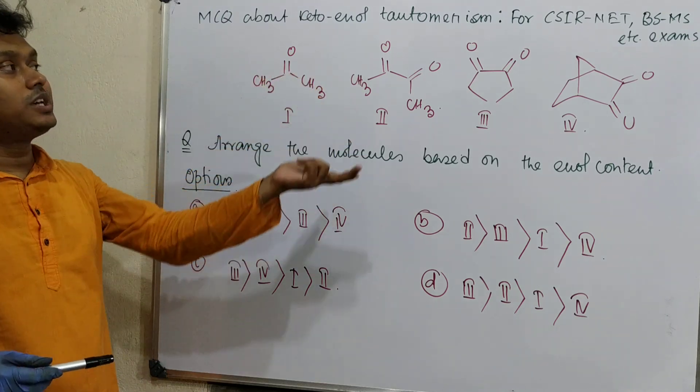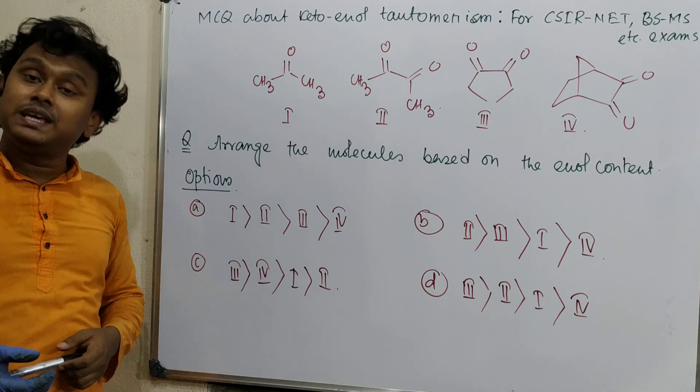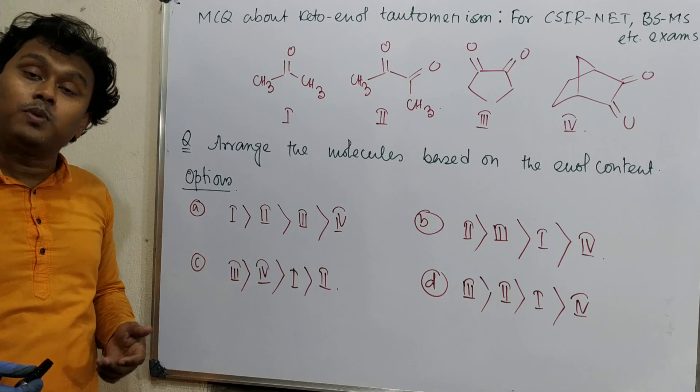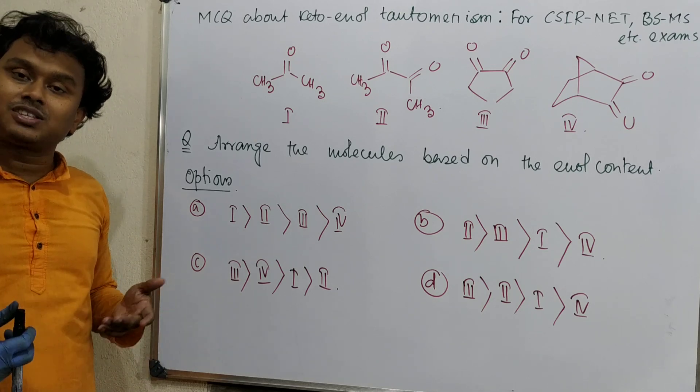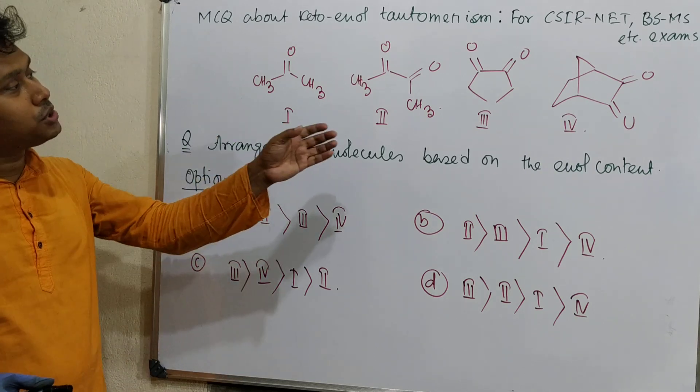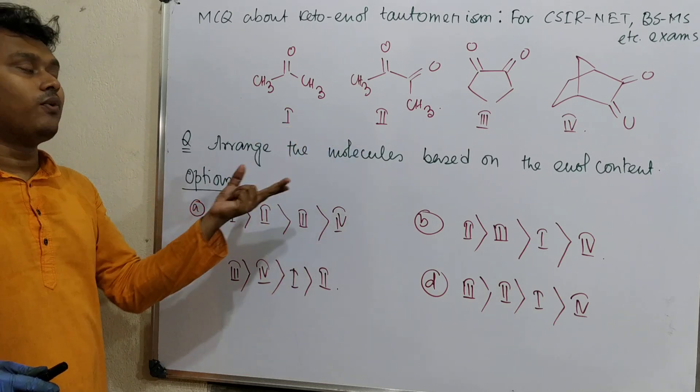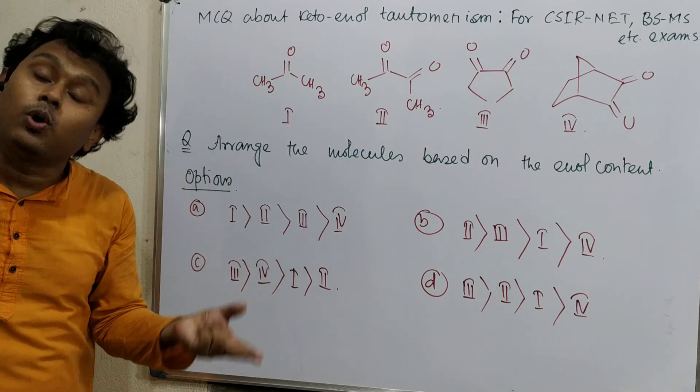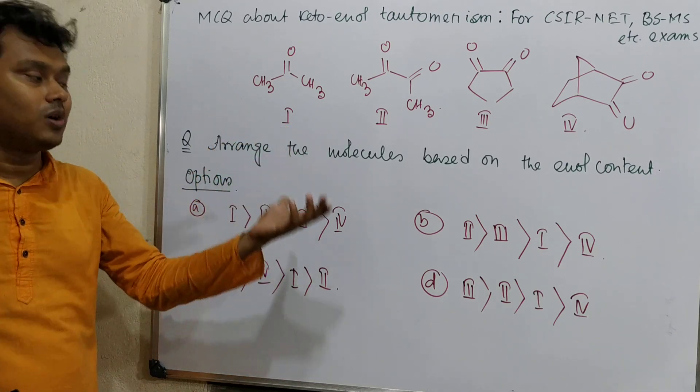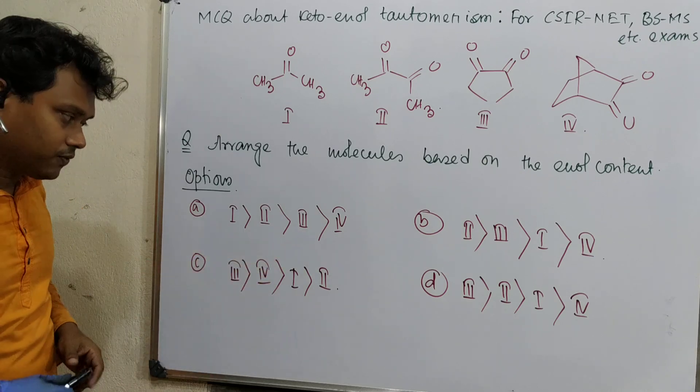Such type of questions would be useful for exams like CSIR-NET, GATE, IIT-JAM, BHU, BARC, etc., or equivalent exams for masters and bachelor students. I have provided four options and asked you to arrange these four compounds based on their enol content. As an option, I have provided four choices in front of you.